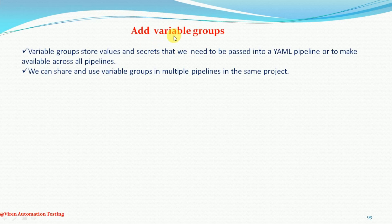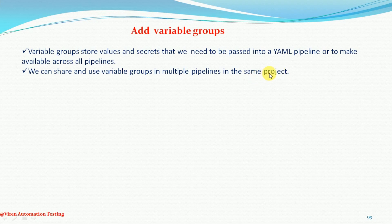Hello guys, welcome back. In this video session I am going to discuss about variable groups. We will talk about how we can add a variable group for a particular CI/CD pipeline and how we can authorize the variable groups to be used in a particular or in all the pipelines available in this project. A variable group generally stores values and secrets that we need to pass into a YAML pipeline, or to make available across all pipelines. We can share and use these variable groups in multiple pipelines in the same project.